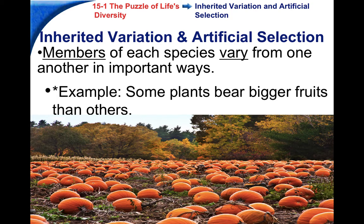So how does his idea work? Darwin noticed that within any species or population, members are always different. Look at the pumpkins in the picture — no two pumpkins are exactly the same. Some are bigger, some are different shapes, some produce more seeds, some are different colors. Look around at different people in the world — everyone's different, we all have different traits.